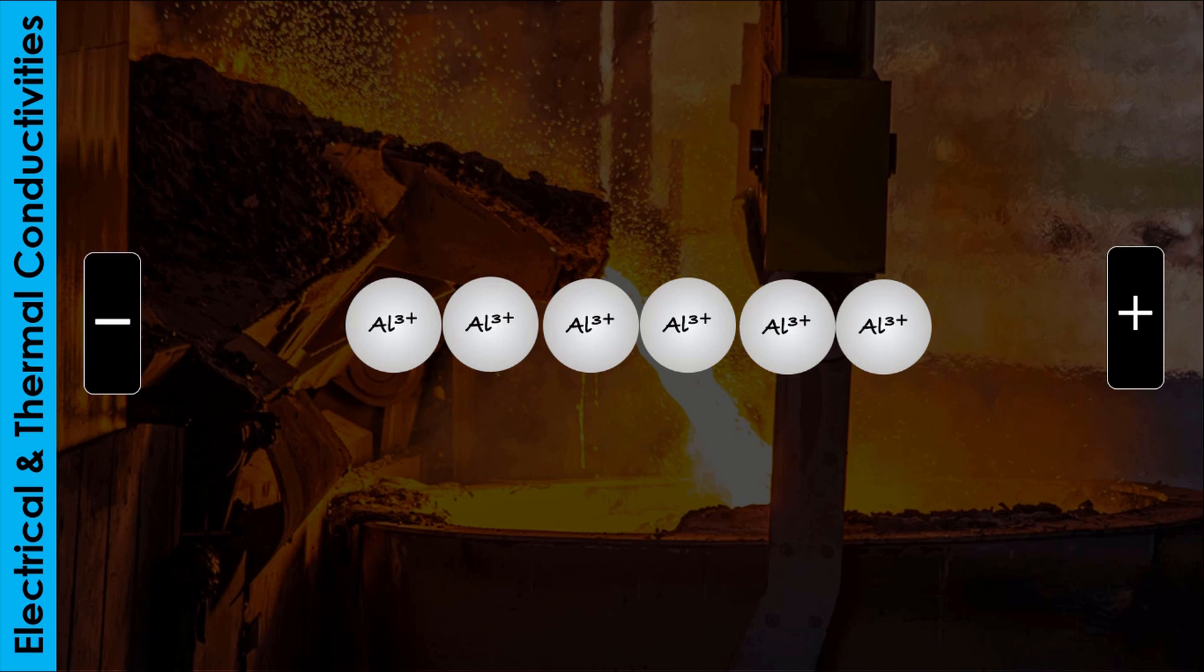For aluminum, its trivalent electrons make it a very good conductor of heat and electricity. This means that there will be many electrons in its metallic lattice available to transfer electrical charges and heat energy from one point to another.